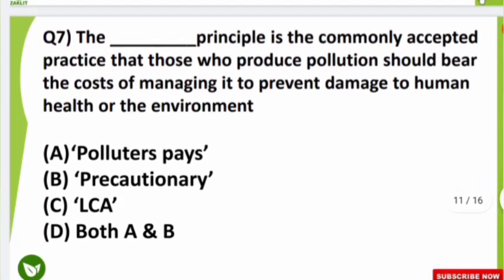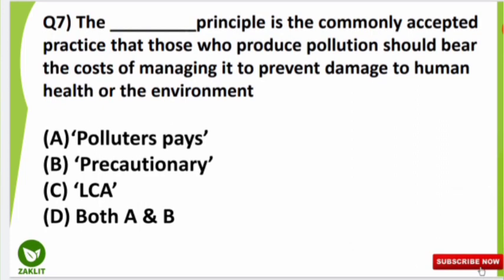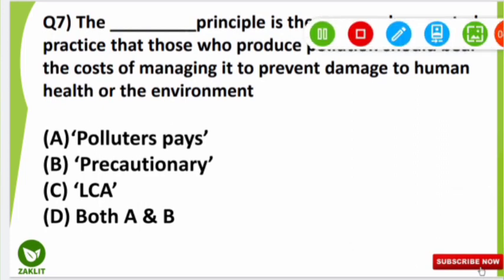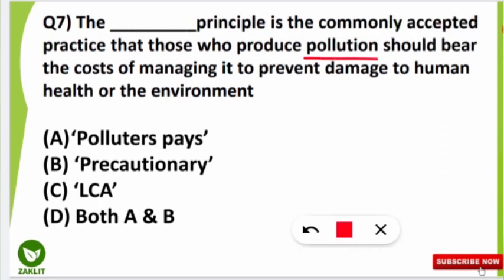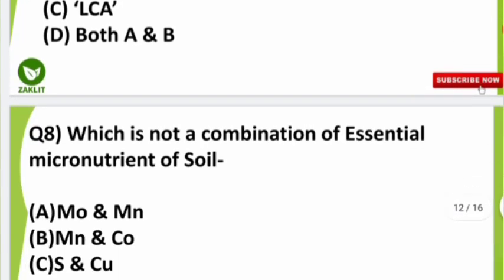The seventh question asked: which principle is the commonly accepted practice that those who produce pollution should bear the cost of managing it to prevent damage to human health or the environment? This principle is most commonly known as the Polluter Pays Principle — those who pollute will pay to prevent damage to humans and the environment.